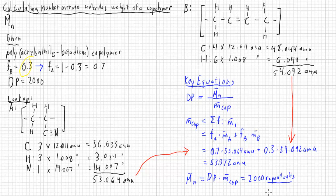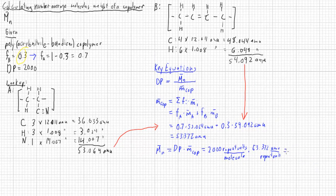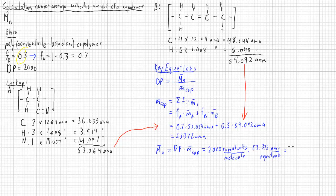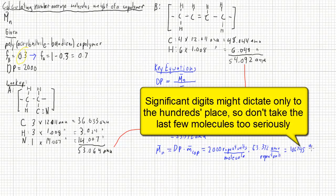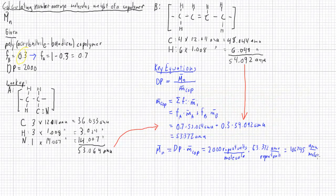Repeat units per molecule and multiply it by 53.372 AMU per repeat unit. Of course, that's the overall average. And I end up with 106,745 AMUs per molecule.